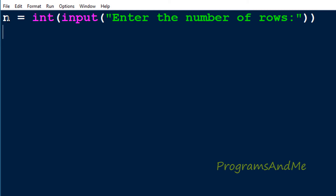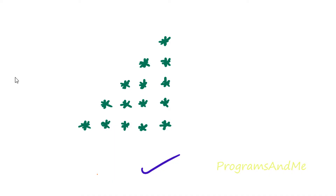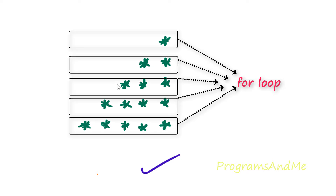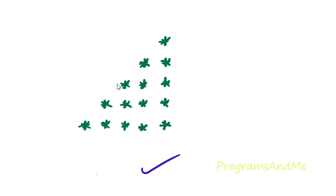Now we are done with the input. Next we will see how to print stars in the right triangle shape. Here we can see we want to print stars in different rows and columns, so if we want to print stars in different rows and columns we need to use nested for loops. Here also we will use the nested for loop.